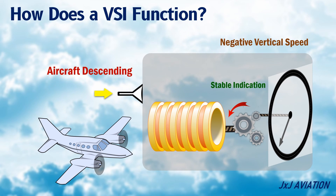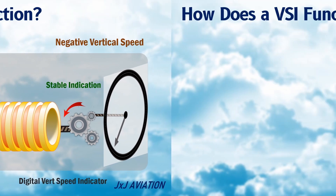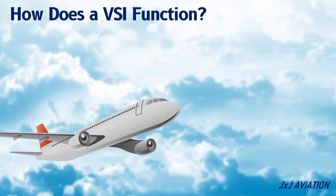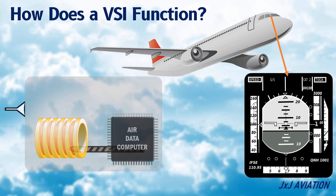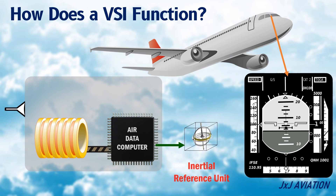Now let's look at how a digital vertical speed indicator functions. The digital vertical speed indicator also works on the same principle of using the pressure difference to calculate the vertical speed. However, this information is calculated by an air data computer, and is optimized further by adding data from the inertial reference unit, or IRU. The final vertical speed data is sent to be displayed on the primary flight display.